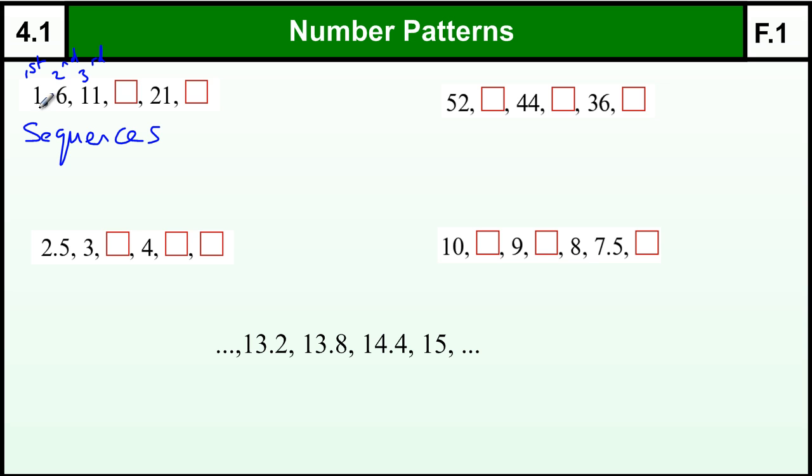Now, with these sort of basic questions, we're looking at the difference between the terms. How much is it going up by or going down each time? In this question, it's going up by 5 each time, so you can fill in the missing numbers by adding 5. And the rule to go from one term to the next term, which is called the term-to-term rule, is add 5 or plus 5.